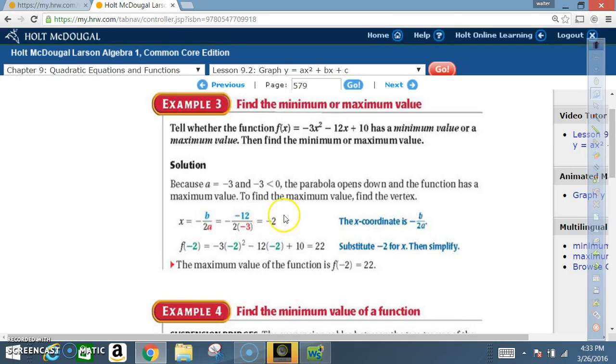So that means the x-coordinate of the vertex, also this is your axis of symmetry, is negative 2. Now we take the negative 2 and plug it back into the original equation to find the f of x value. Don't forget, f of x is really y. We plug that back in, do our basic math, and end up with f of negative 2 equals 22. So the maximum value of the function is f of negative 2 equals 22. That's a fancy way of saying x is negative 2 and y is 22.